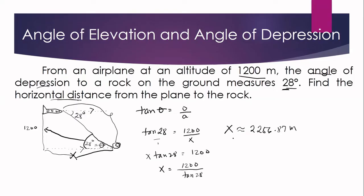So the horizontal distance between the plane and the rock is approximately 2256.87 meters. This is one example problem involving angle of elevation and angle of depression.